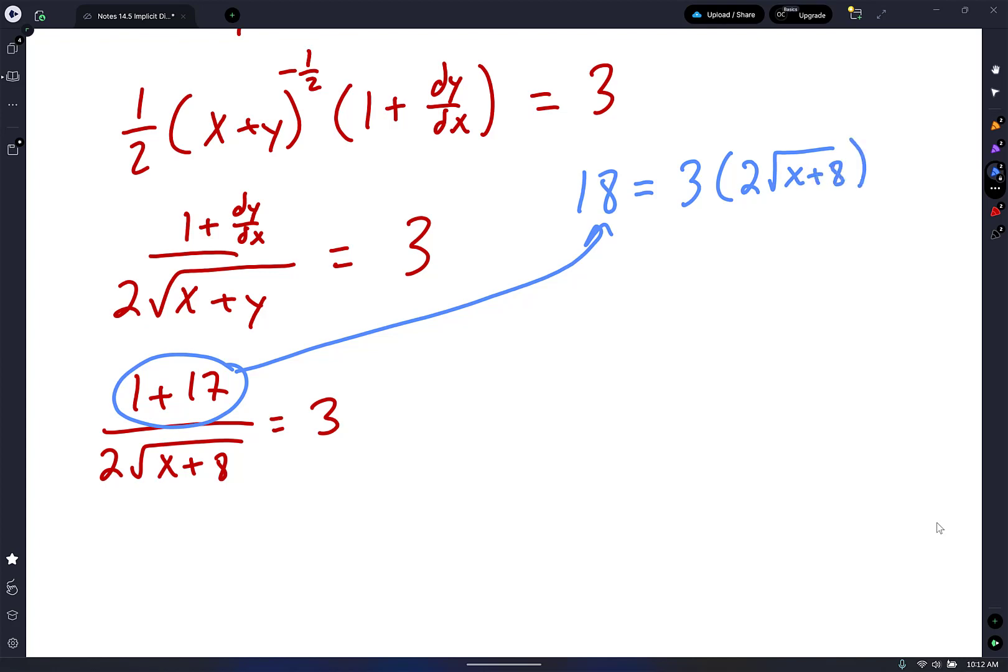You don't have to go as slow as me. 18 equals 6 square root of x plus 8. Are we cool so far? Now I'm going to get rid of that 6, so I divide by 6. 18 divided by 6 is 3 equals square root x plus 8. Are we still cool? Yes.